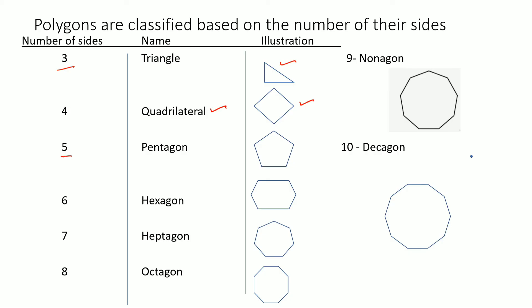Next is five sides. If a figure has five sides, it's called a pentagon like this one. Six sides, hexagon. Seven sides, heptagon. Eight sides, octagon.